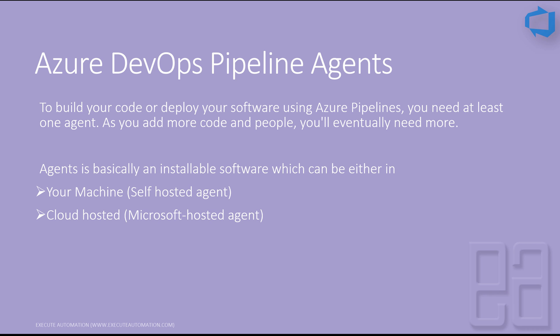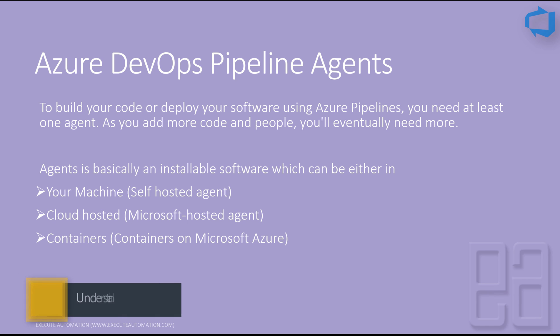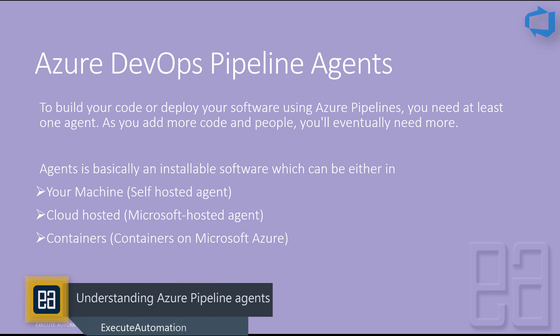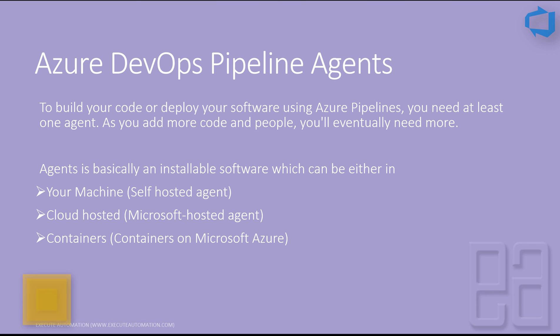The agent is typically installable software which can either be available within your own machine, called a self-hosted agent, or a cloud-hosted agent called a Microsoft hosted agent, or it can be a container agent running on Microsoft Azure. So there are three flavors: self-hosted agent, Microsoft hosted agent, and container agent.